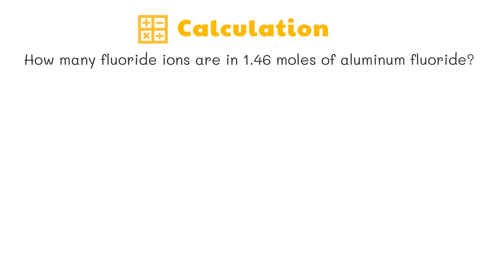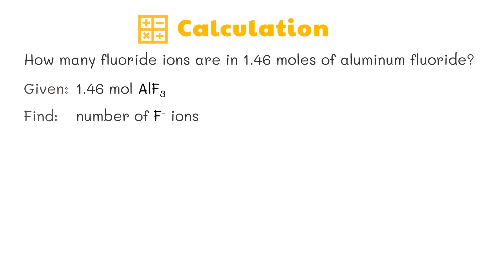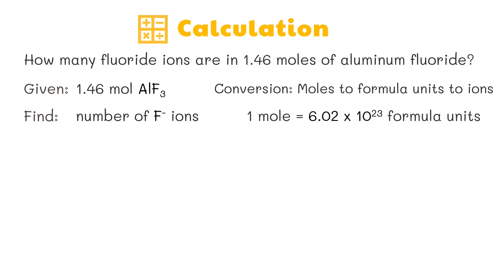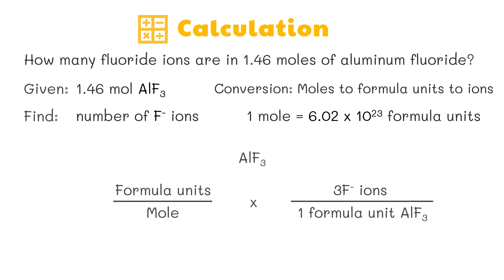Here's the last sample problem: how many fluoride ions are in 1.46 moles of aluminum fluoride? The known is 1.46 moles of aluminum fluoride. The unknown is the number of fluoride ions. The desired conversion is moles to formula units to ions. We know that 1 mole equals 6.02 × 10²³ formula units. To convert formula units to ions, we need to know how many fluoride ions are in each formula unit. Aluminum fluoride has three fluoride ions per formula unit.